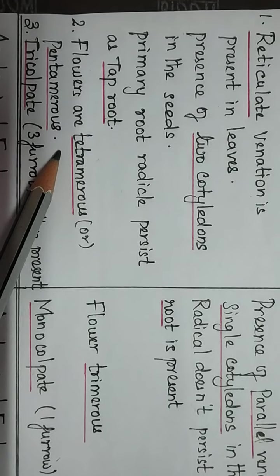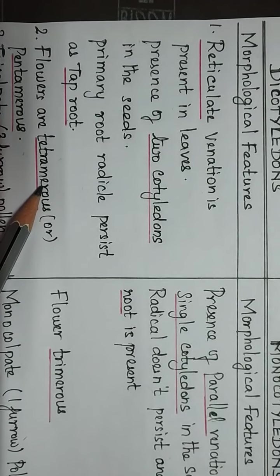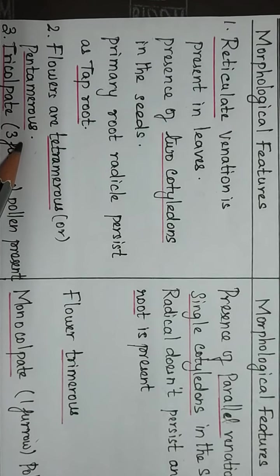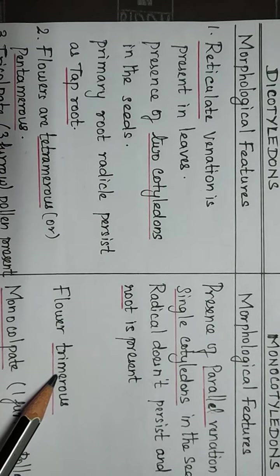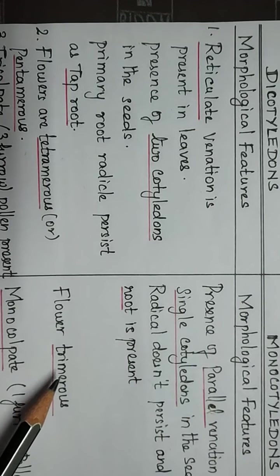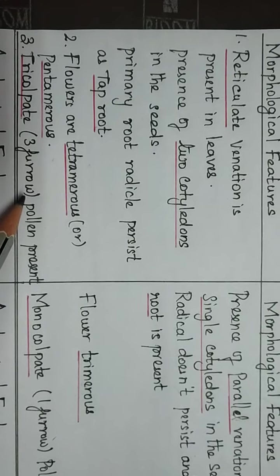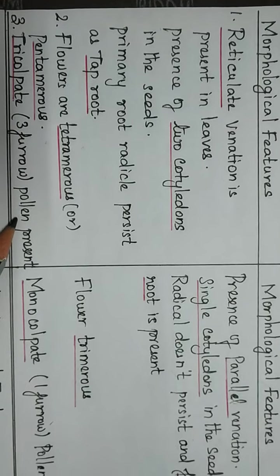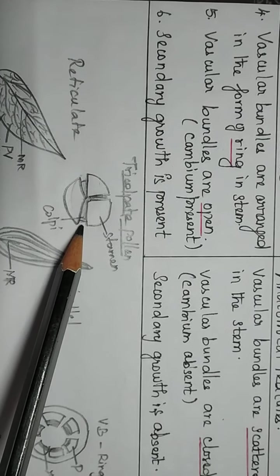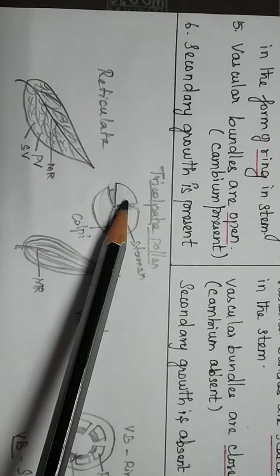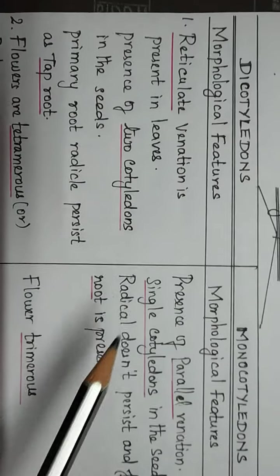Flowers in dicotyledons are tetramerous or pentamerous — that means the sepals and petals are in multiples of 4 or 5. In monocotyledons, flowers are trimerous — that is, three sepals and three petals, all in multiples of three. Pollen grains in dicotyledons are tri-colpate, meaning three furrows are present. In monocotyledons, pollen grains are mono-colpate, meaning one furrow is present. These are the morphological features.